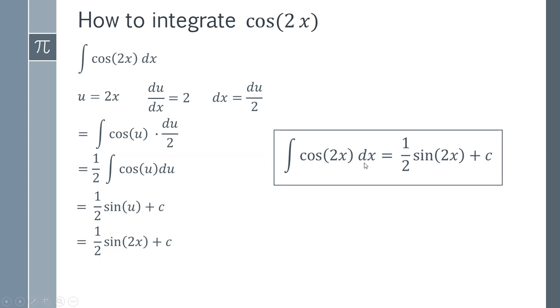And therefore, we can say that the integral of the cosine of 2x is simply a half sine 2x plus c.